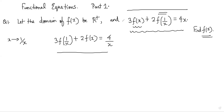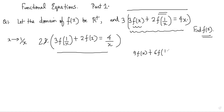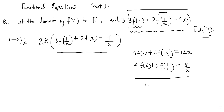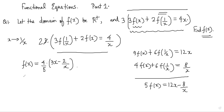To eliminate f(1/x), we multiply the first equation by 3 and the second equation by 2. That gives 9·f(x) + 6·f(1/x) = 12x, and 4·f(x) + 6·f(1/x) = 8/x. Subtracting, we solve and find that f(x) = (4/5)·(3x − 2/x). So we have solved for f(x).